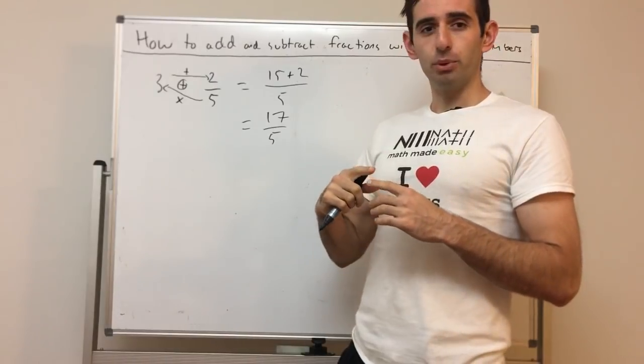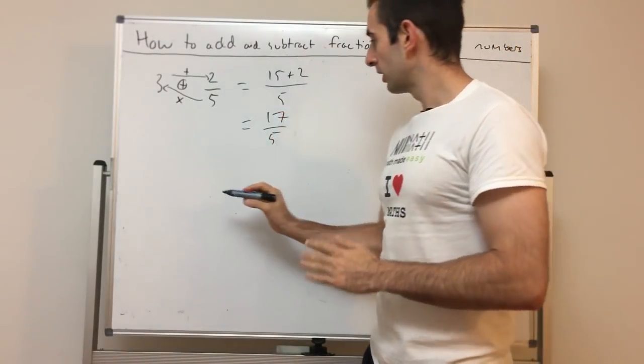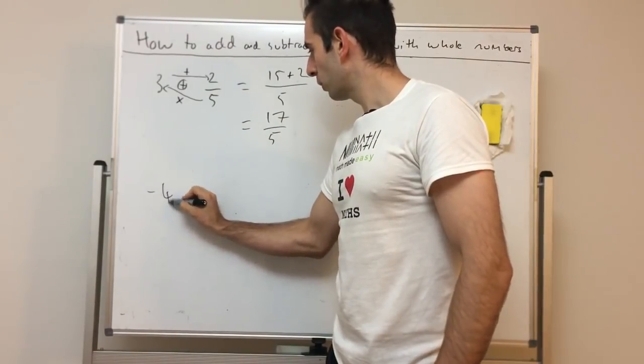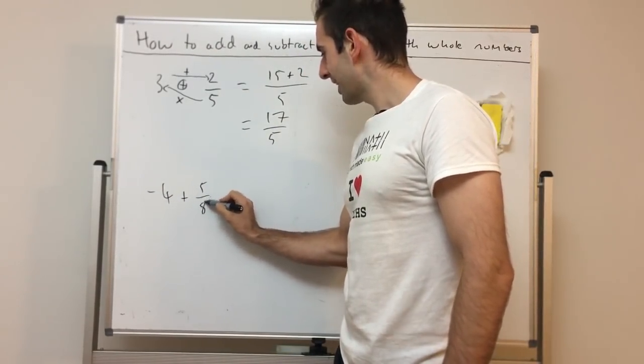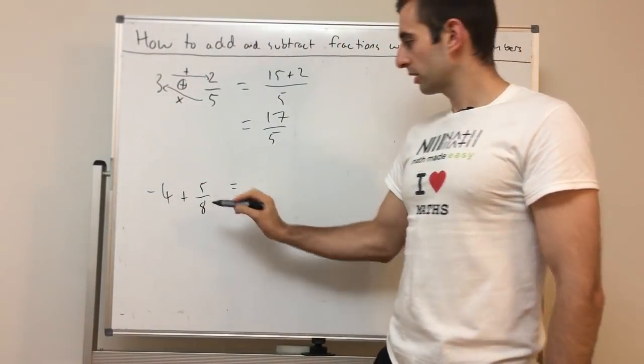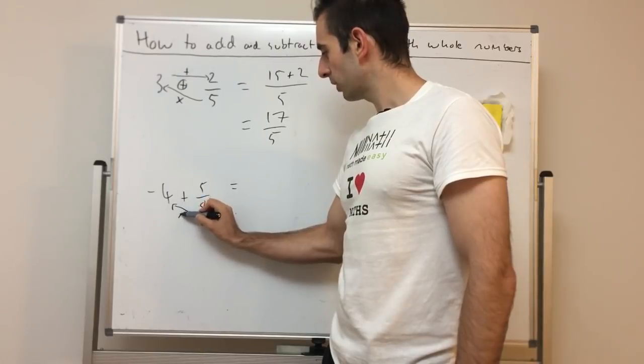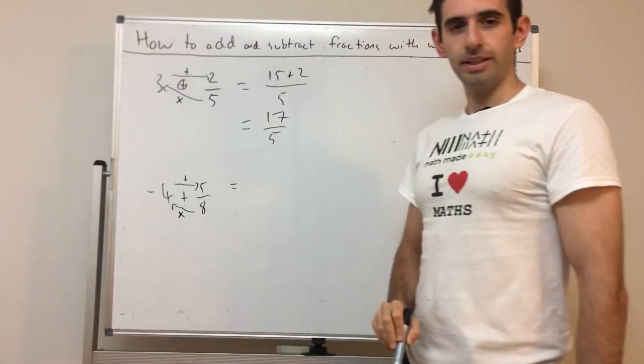Let's look at a different example with a negative integer, because this process works with negative integers. Let's say I had negative 4 plus 5 over 8. We can do this pretty instantly. We times it across and then add whatever this symbol is.